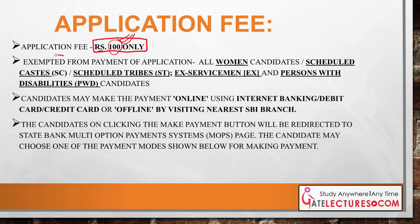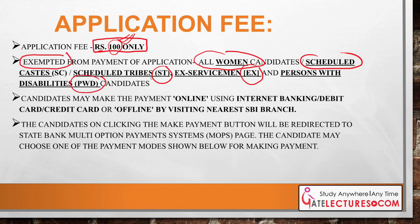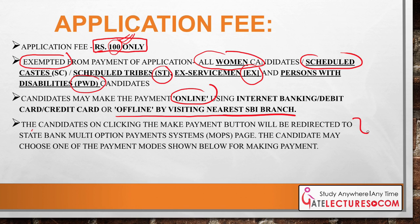All women candidates are exempted from paying fees to apply for ISRO. Students from SC category, ST category, ex-servicemen, or persons with disabilities are also exempted. Other candidates may pay online using internet banking, debit card, or credit card, or pay offline by visiting the nearest SBI branch and submitting the challan. On clicking the Make Payment button, candidates are redirected to the State Bank payment portal.